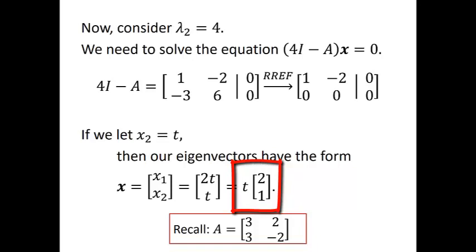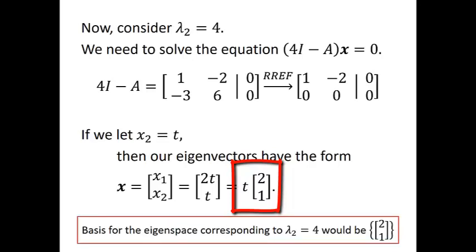So our eigenvector is (2, 1). We could also say it's (4, 2) or (6, 3) — any scalar multiple of (2, 1) is a correct answer. The basis for the eigenspace corresponding to eigenvalue 4 is the vector (2, 1) or any scalar multiple. The dimension of the eigenspace corresponding to lambda equals 4 is 1, since there is one vector in that basis.